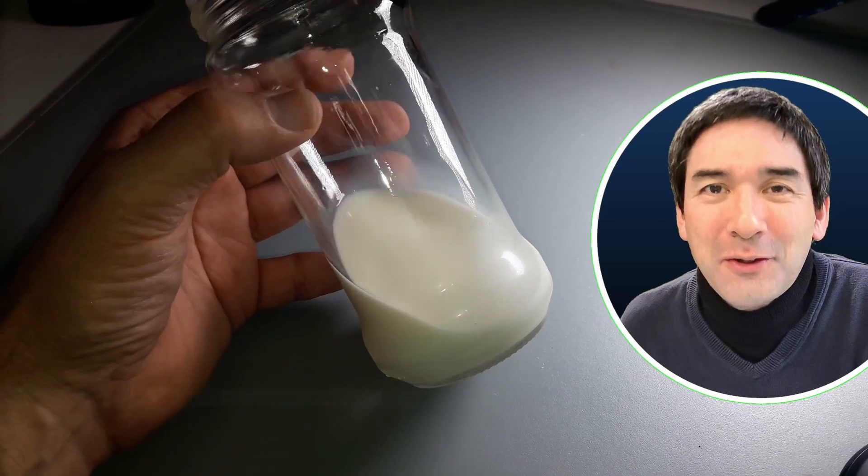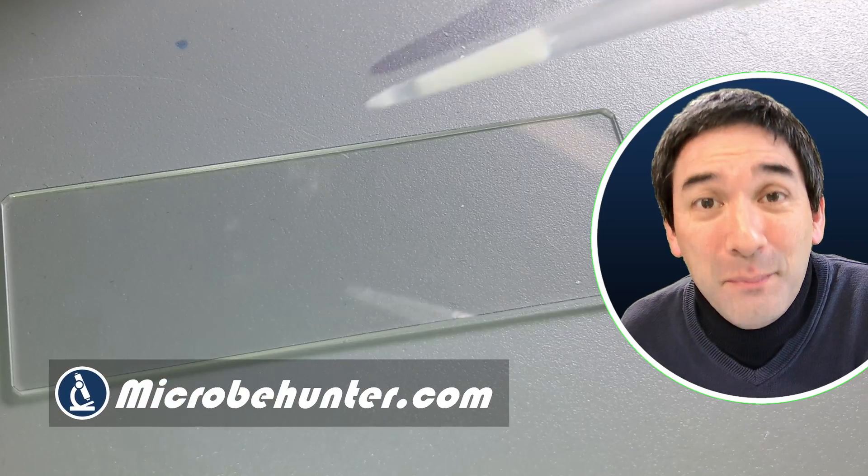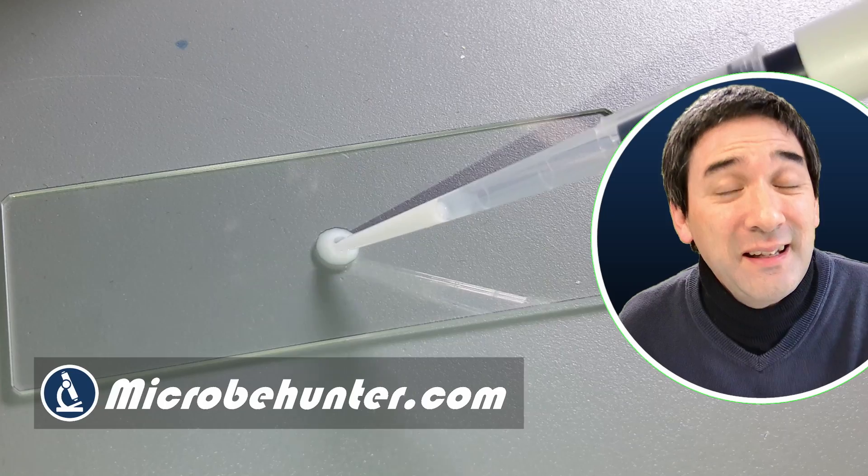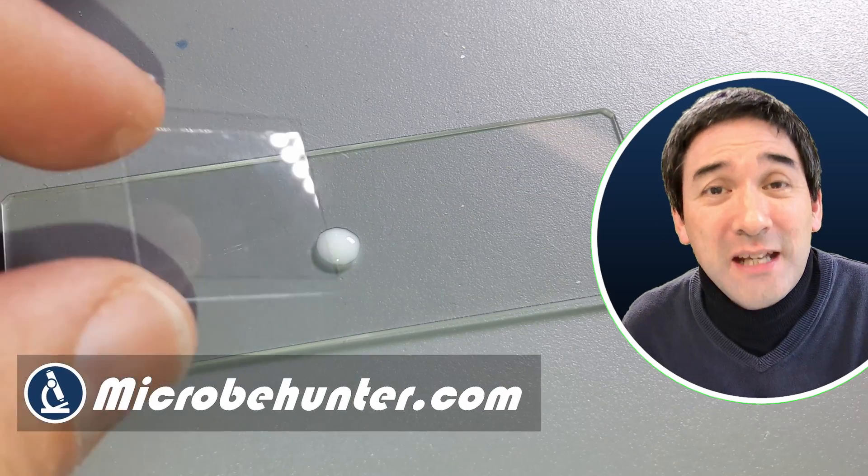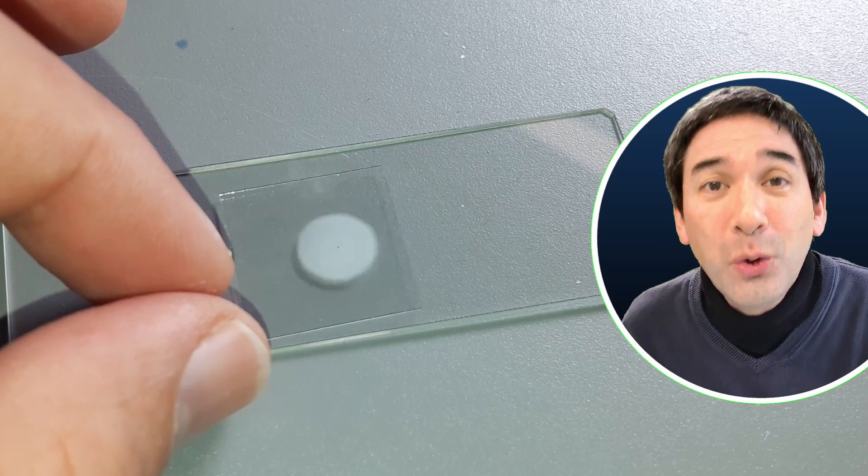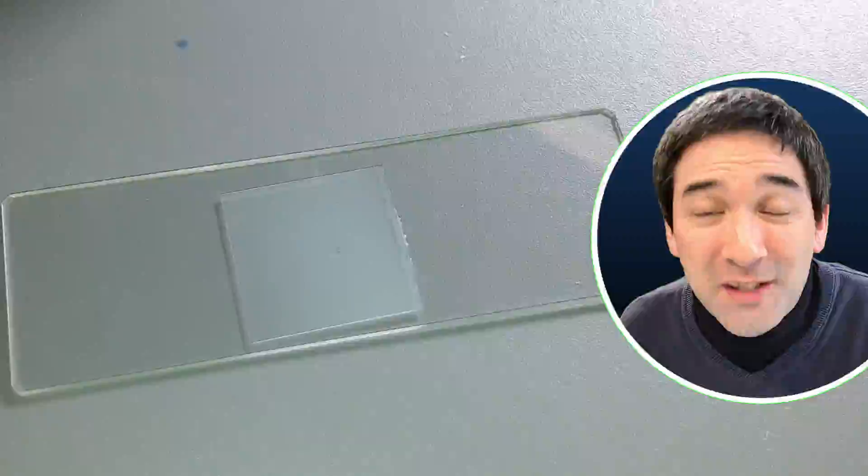So hi, hello and welcome. Microbe Hunter here and today I'm going to put some milk under the microscope and I think it's actually quite interesting because I was able to see so-called Brownian motion of the fat globules. I need to explain this a little bit.